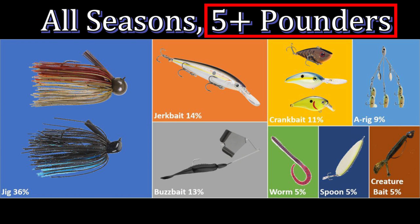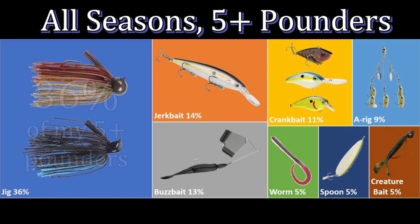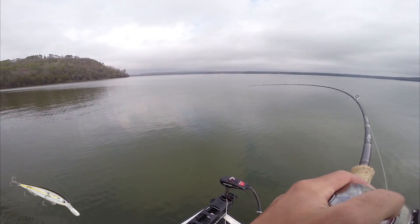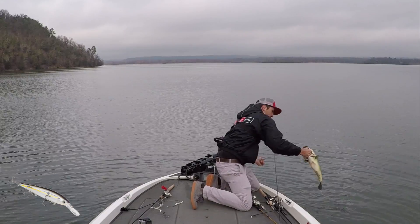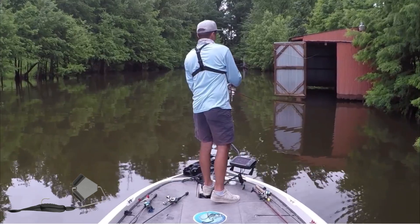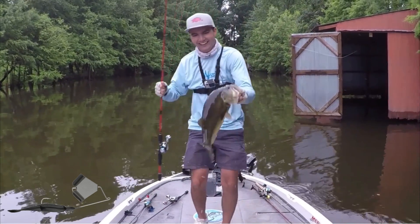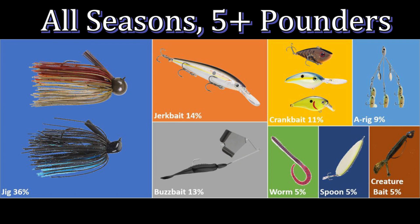Next I cut the data even further to five-pound-plus bass. 36% of my five-plus-pounders came on a jig, 14% on a jerkbait, 13% on the buzzbait, and 11% on crankbaits. The jig is my best bait for catching fish of any size. It's surprising to see the jerkbait jump so high — most of those big fish are probably coming in the winter. The buzzbait is also a really good bait for catching big fish.